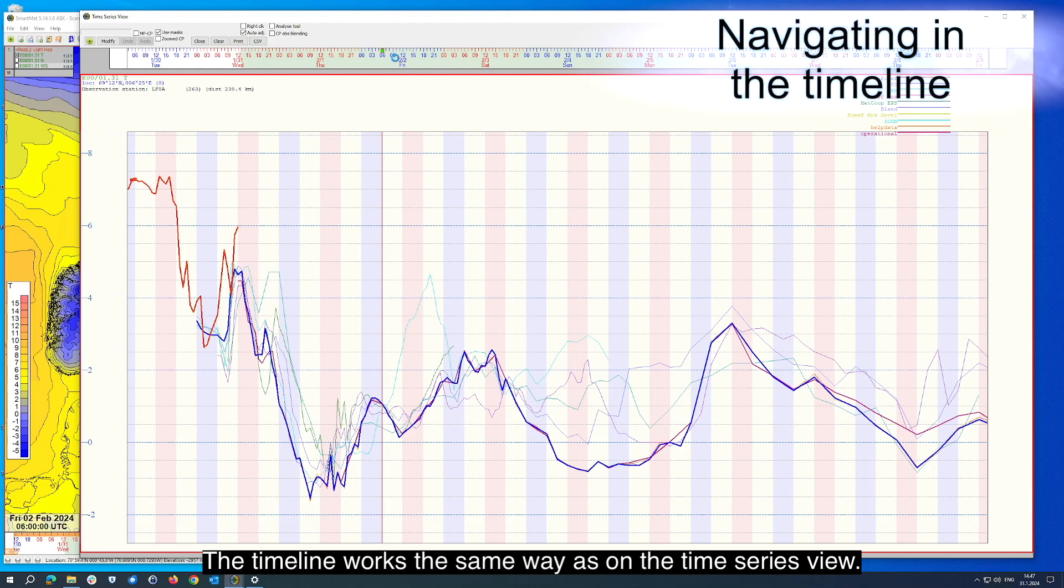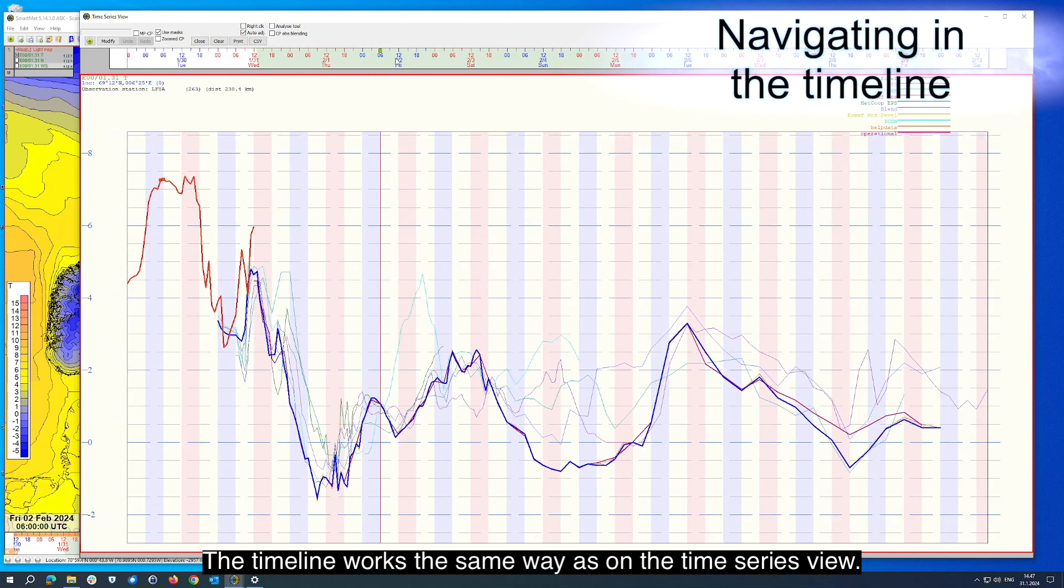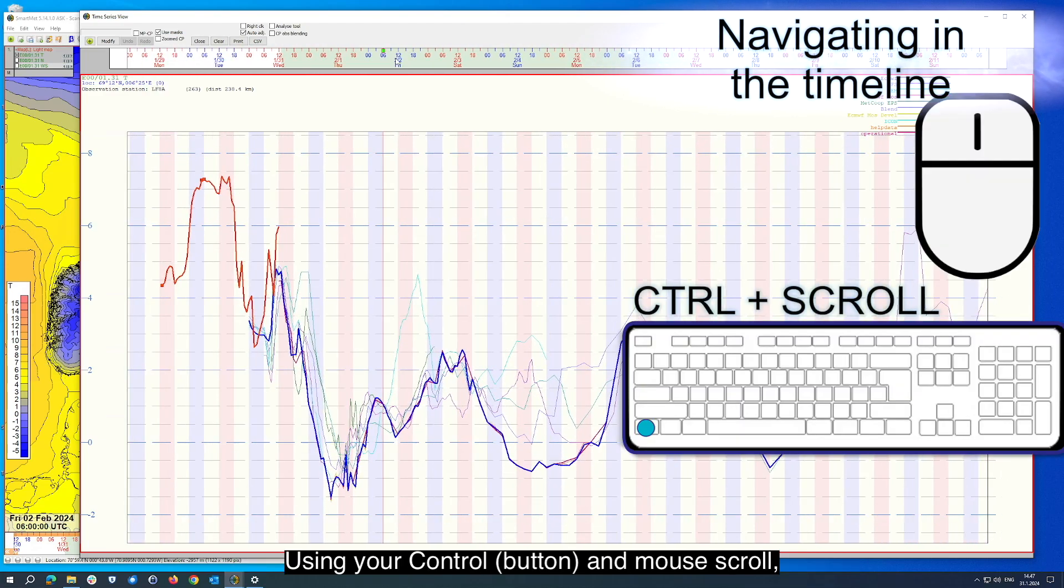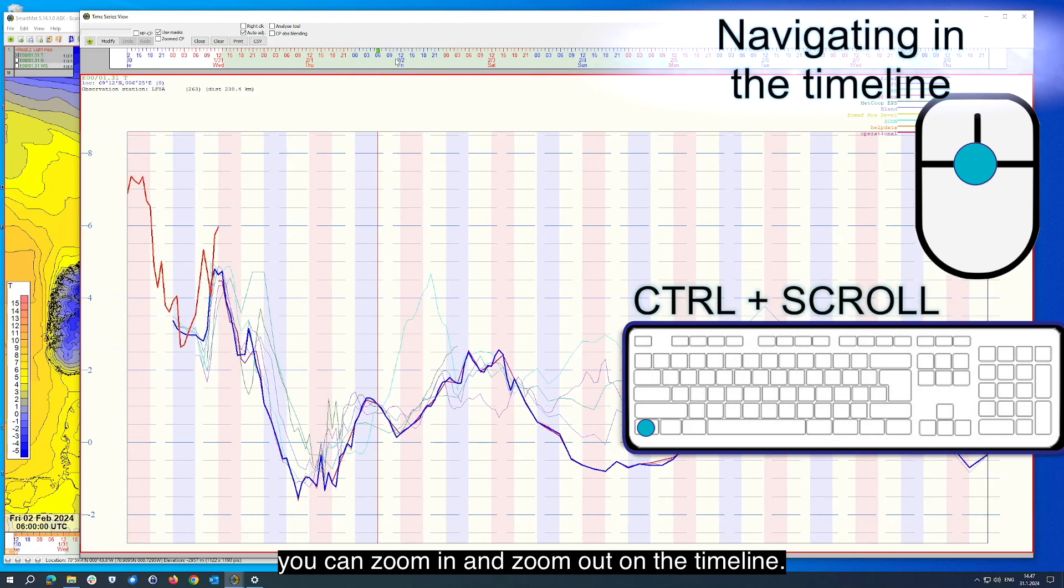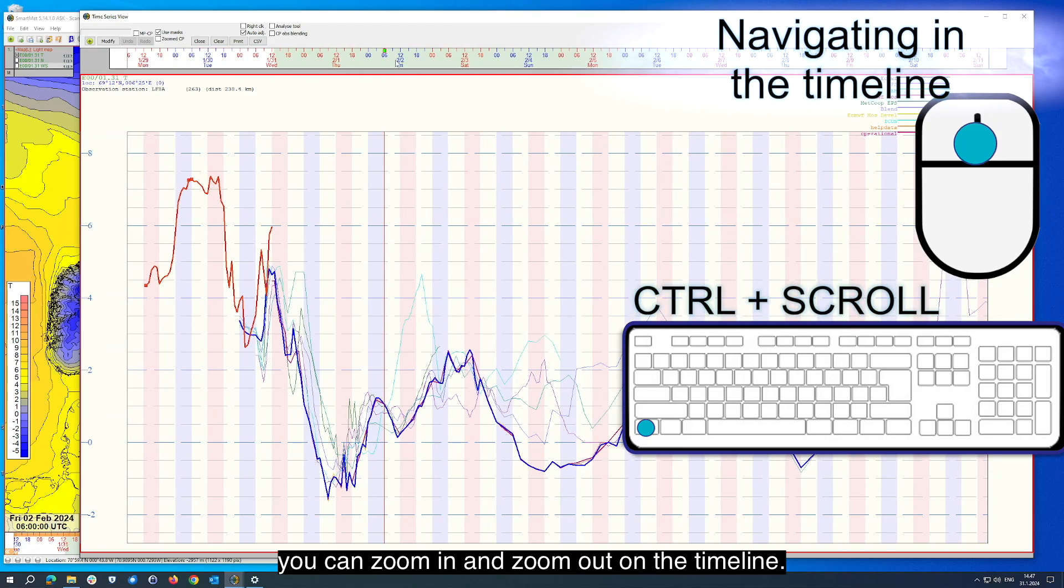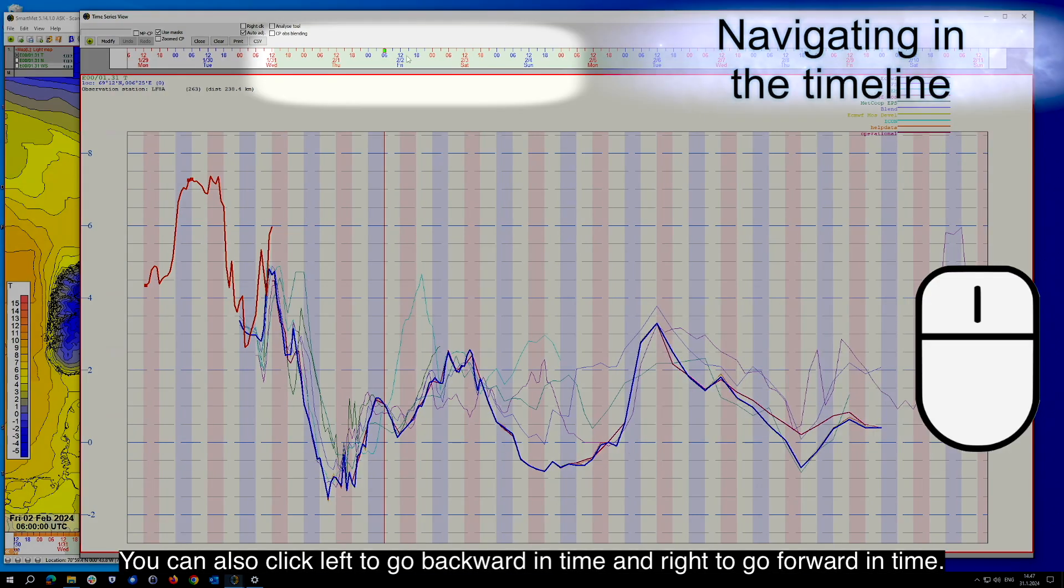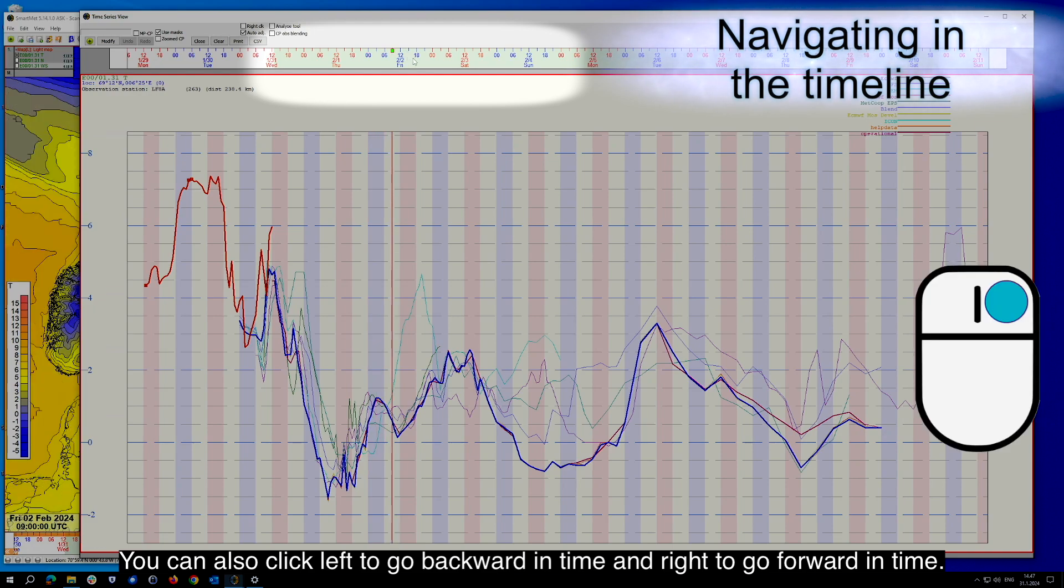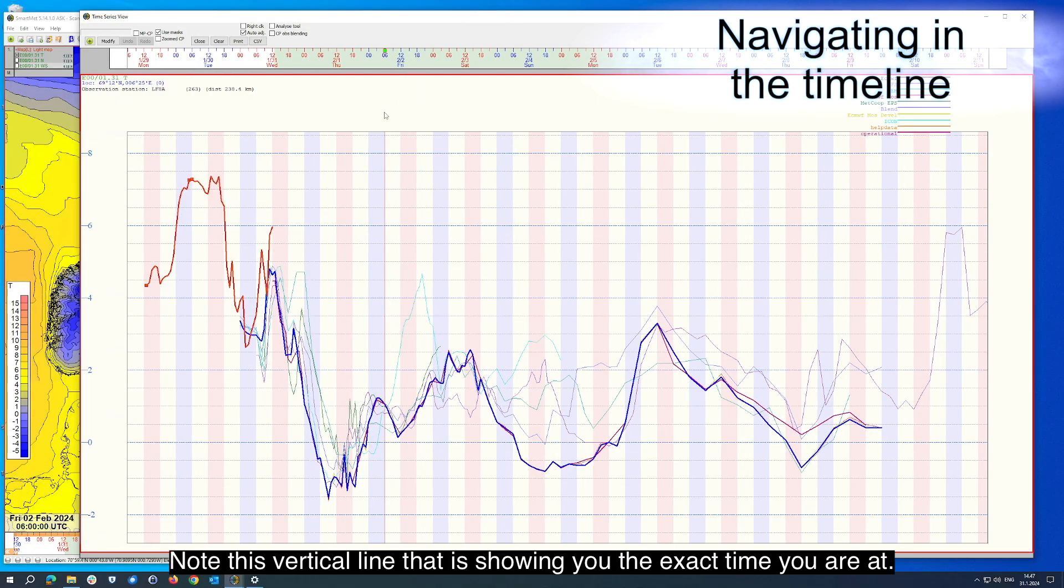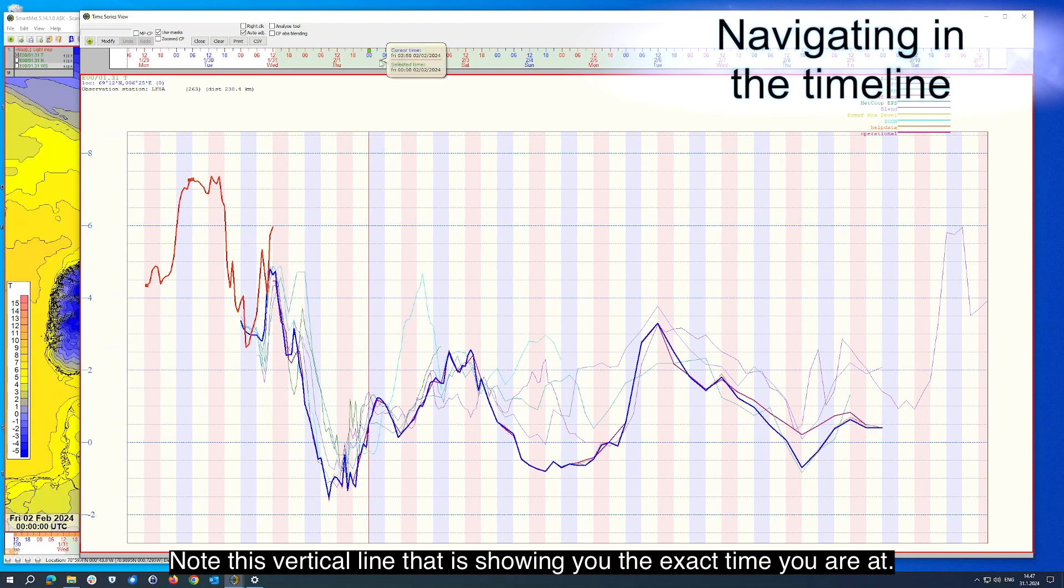The timeline works the same way as on the time series view. Using your control and mouse scroll, you can zoom in and zoom out on the timeline. You can also click left to go backward in time and right to go forward in time. Note this vertical line that is showing you the exact time you are at.